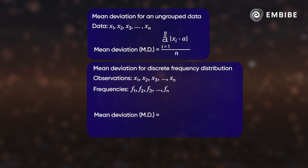That is, if you have a discrete frequency distribution with observations x₁, x₂, up to xₙ with frequencies f₁, f₂, up to fₙ respectively, then the mean deviation about a central tendency a can be calculated as: summation over i from 1 to n of fᵢ × |xᵢ − a|, the whole divided by the summation over i from 1 to n of fᵢ.